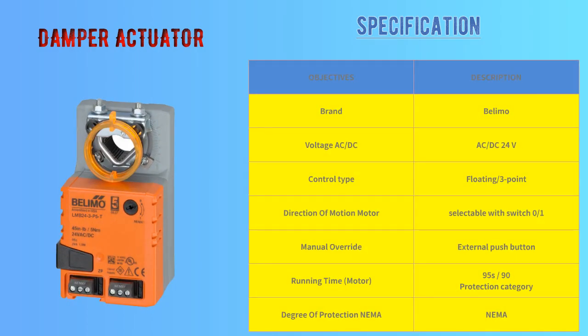Third, this is also a damper actuator, but the manufacturer is different — manufacturer name is Belimo. This is an on/off type actuator. As you can see, the control type is floating / 3-point: one point is for common, the second for open, and the third for close. These specifications I will discuss with you in detail in future videos.